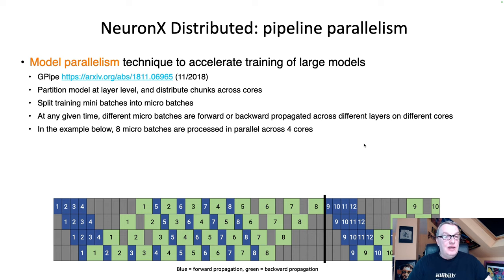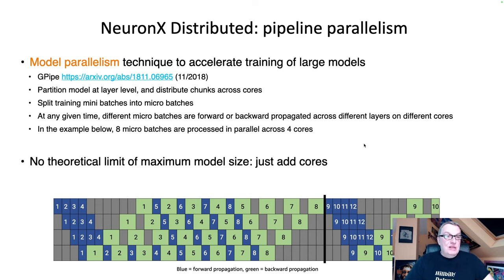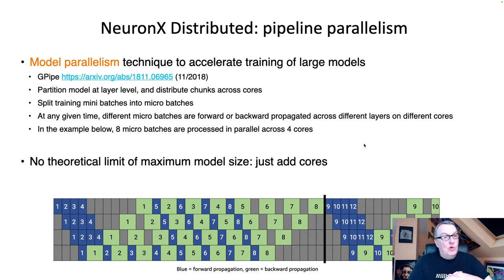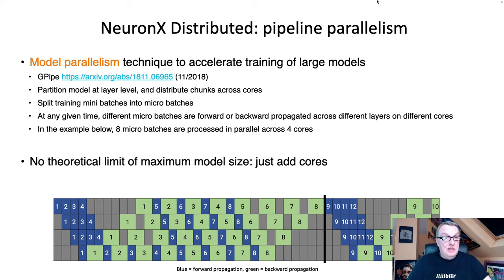In theory, there is no limit to the maximum model size we can train with pipeline parallelism, because we could keep adding devices to hold more layer chunks and orchestrate micro-batches across all those cores. Of course, at some point communication overhead becomes a concern, but this can scale quite high. Pipeline parallelism is unfortunately not yet available in Optimum Neuron, but we're working on it and hope to have it very soon.